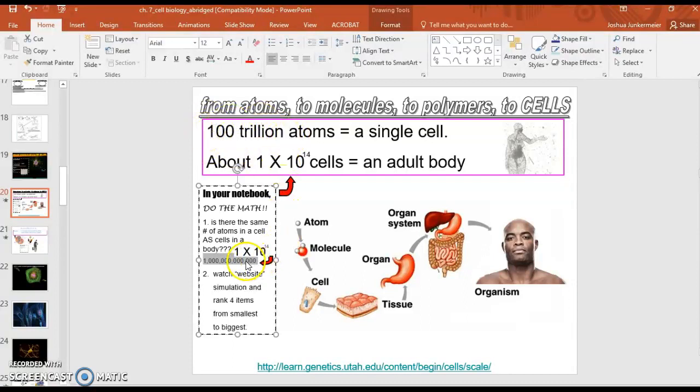If it has three zeros, it's a thousand. If it has six, what is it? If it has nine zeros, what number is this? Let's keep going and see if this is this, if a hundred trillion atoms is the same as the number of cells. So it takes a hundred trillion atoms to make a single cell. Is it the same number of cells to make an adult body?